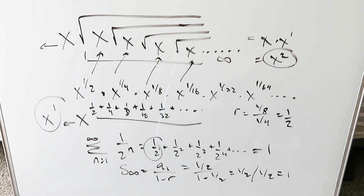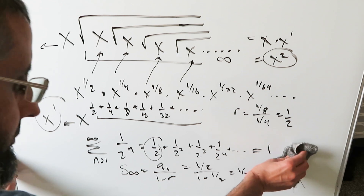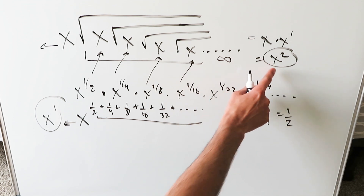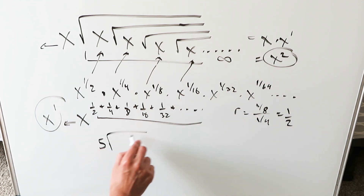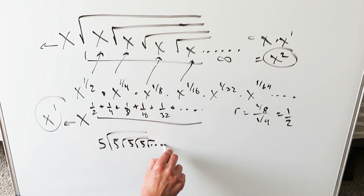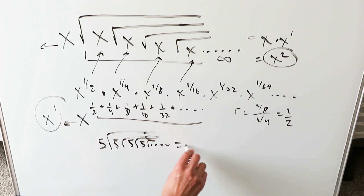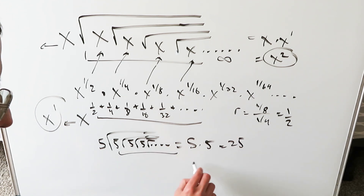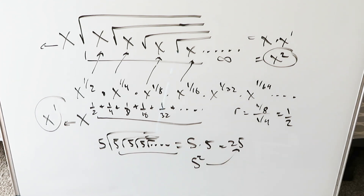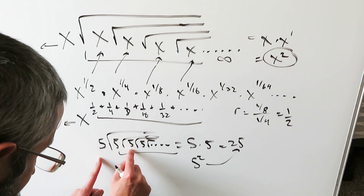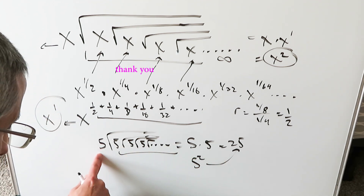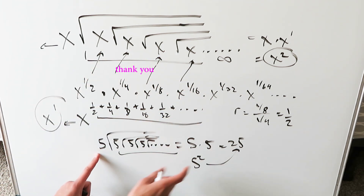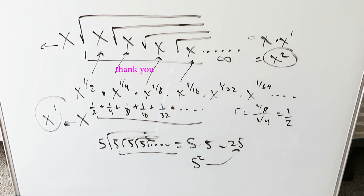What does all of this mean in terms of a practical example? Everything here was an application of infinite geometric series, giving us x squared. If I had the example 5 times square root of 5 times square root of 5 times square root of 5 — an infinite embedded number of square roots of 5 — the value would be 5 squared, which equals 25. That is the value of an expression with infinite iterations of square roots with a number sitting outside. The end result is x squared, and for x equals 5 the answer is 25. And that brings us to the end of this video. Thank you.